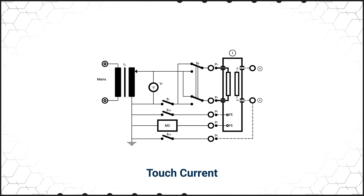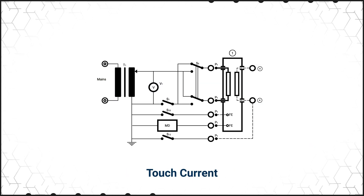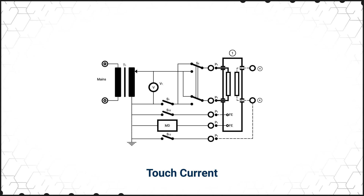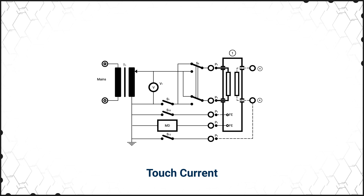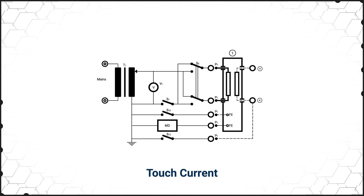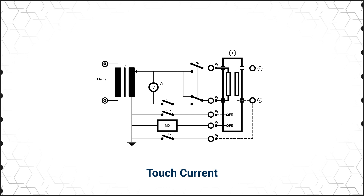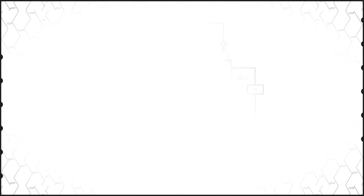Touch current flows from the enclosure through a path other than the protective earth conductor. It's dependent on the transformer capacitance, output capacitance, and other parasitic capacitances, and is tested at points on the enclosure that are not protectively earthed.